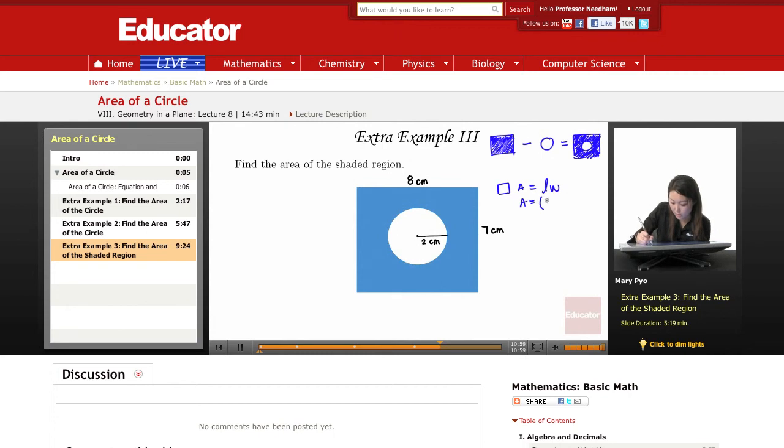That's 8 times 7, which is 56 centimeters squared, right? Centimeters squared is the area of this rectangle.